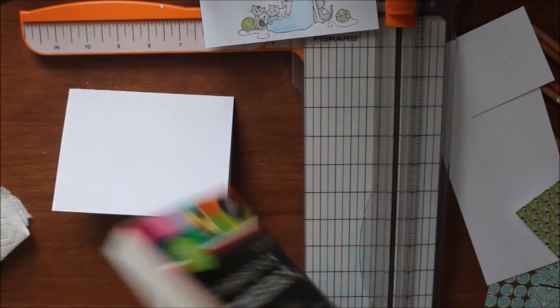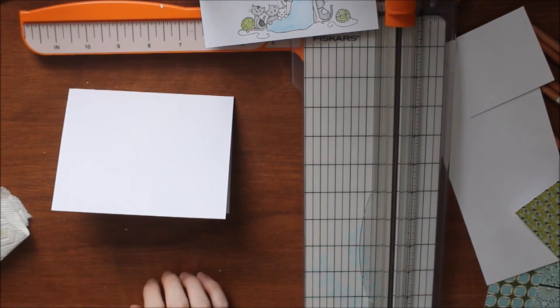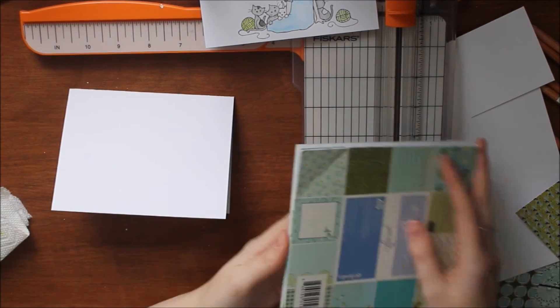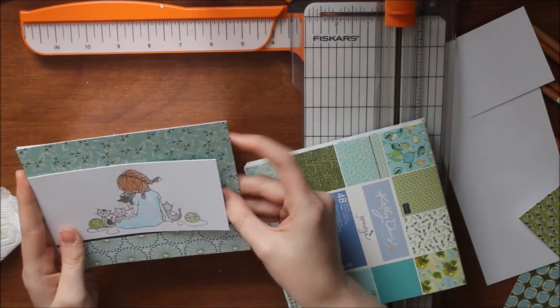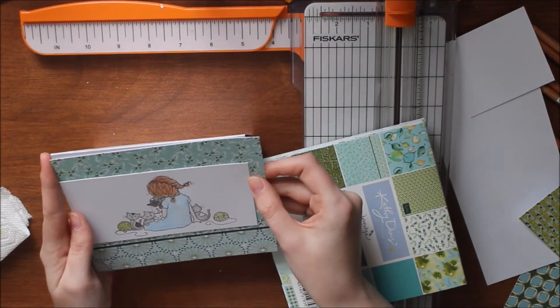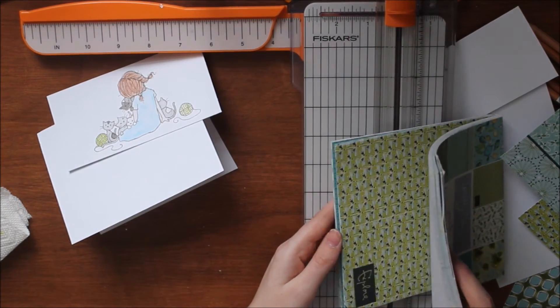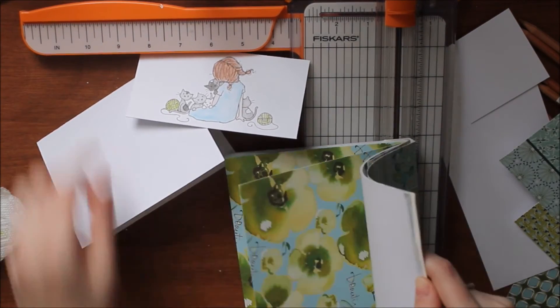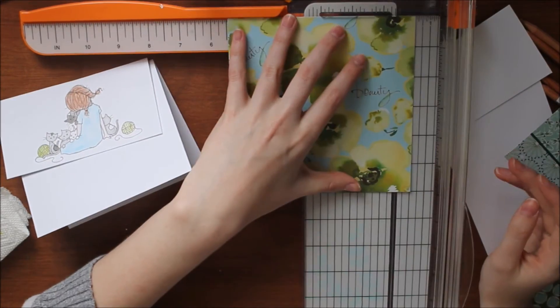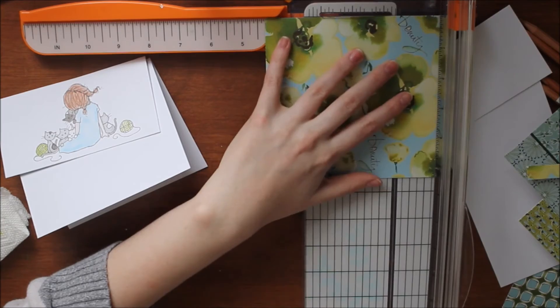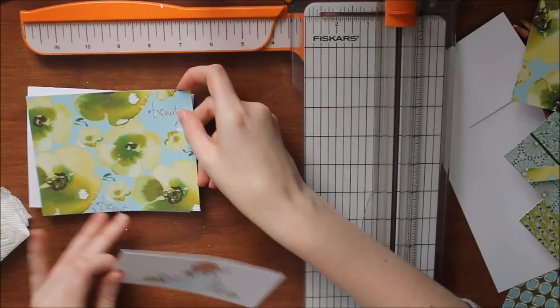I'm going to cut that pattern cardstock that I picked out to four and a quarter by five and a half to cover the entire back panel of the card. Then I'm going to layer my image on top of it. Of course I have to add a little bit more texture and pizzazz. Once I have the layers pasted down, I'm using my ATG gun to do that because it's my favorite type of adhesive.